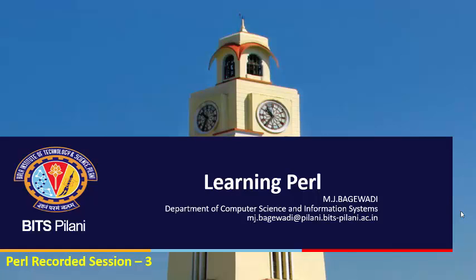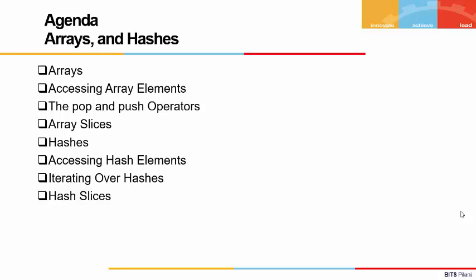Welcome to the third session of learning Perl. Today's agenda covers the data types: arrays and hashes. We'll start with an introduction to arrays, how to access array elements, the pop and push operators, and array slices. Then we'll cover hashes: how to declare them, access their elements, iterate over them, and use hash slices.